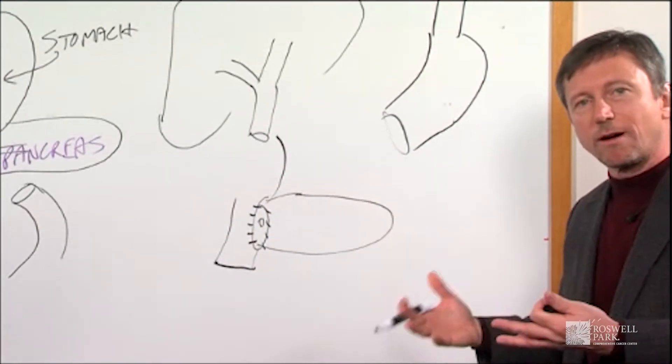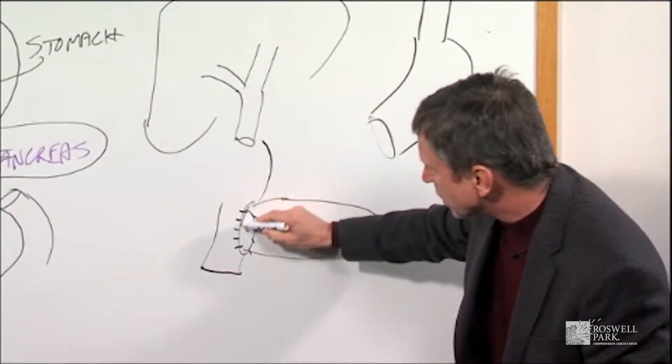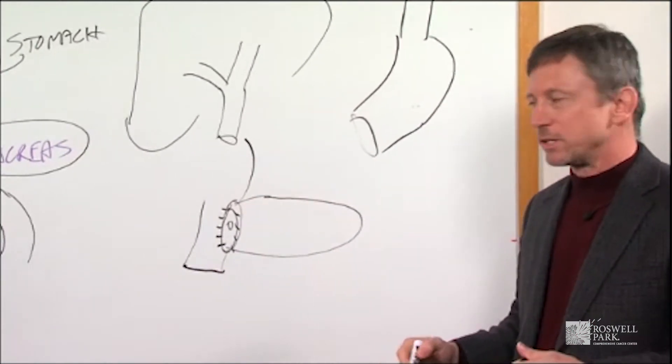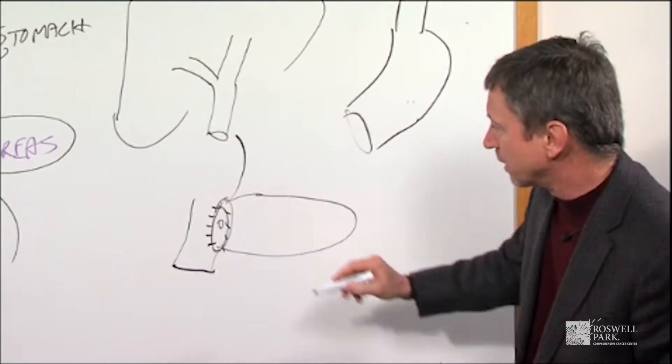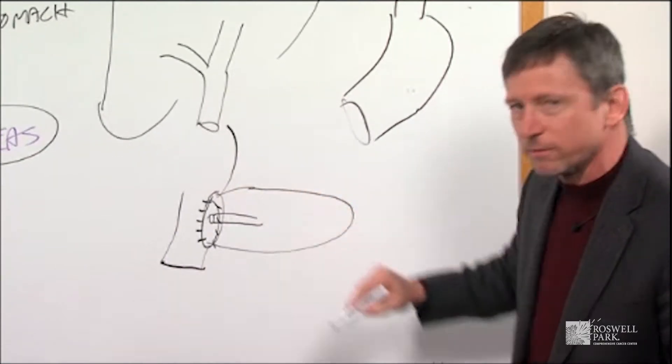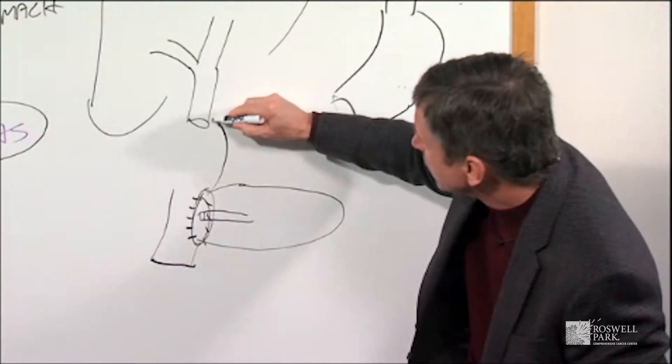Now the pancreas is generally a soft gland, so this is generally the most difficult part of the operation. Oftentimes we'll be wearing magnifying glasses because this little pancreatic duct may be only a few millimeters in size.